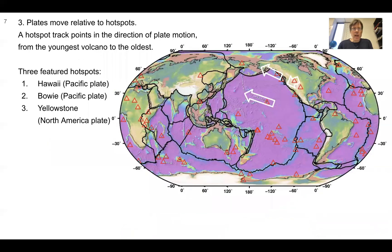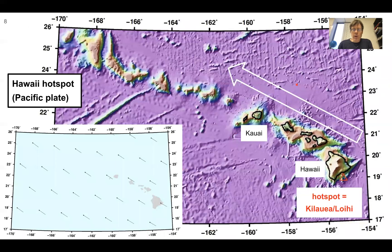Plates also move relative to hotspots. The key point is that the hotspot track points in the direction of plate motion from the youngest volcano to the oldest. Here are three shown: Hawaii, Bowie, and Yellowstone.